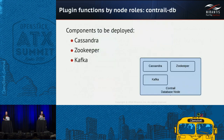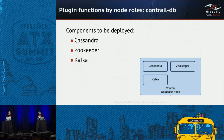Let's start with the ControlDB node. ControlDB is a custom role introduced by the plugin. The plugin tasks deploy software components such as Cassandra, using the package and configuration recommended by Juniper. It also installs Zookeeper and Kafka. Please note that we use a custom partitioning scheme for ControlDB nodes to ensure there is enough space for Cassandra database files. The minimum size is 256 gigabytes, so if you do not have that disk space on the node, you cannot start the deployment.